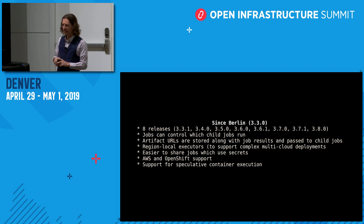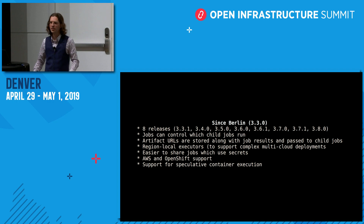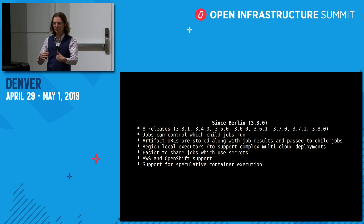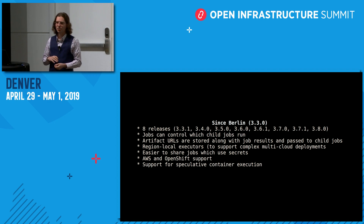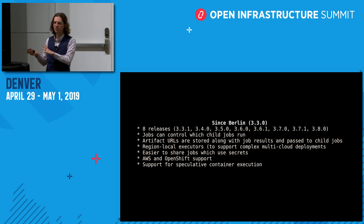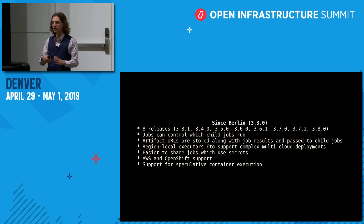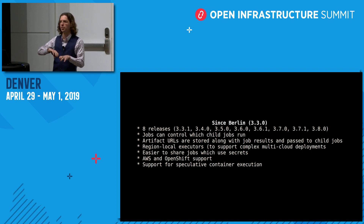We have added support for region local executors. So if you're deploying Zool in a situation where you need the Zool executor — the component of Zool that actually runs Ansible for jobs — to be talking over some kind of private network or interface to the location where the actual test resources are, you can use this feature to distribute that component out to where it's needed in the network topology.